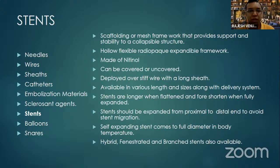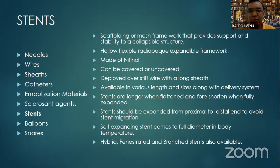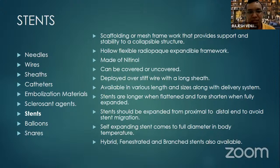Stents are deployed over a stiff guide wire for stability, and come with a long sheath. Deployment uses a pin-and-pull mechanism — you place the stent in the desired location and pull the sheath back to deploy it. Stents are available in various lengths and sizes. They are usually longer when packed and foreshorten once fully expanded in the body. Based on deployment, there are two types: self-expanding metal stents, which expand on contact with body temperature, and balloon-expandable stents, which require a balloon for deployment.